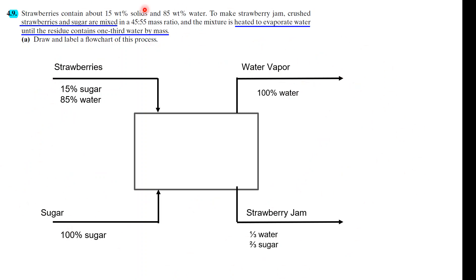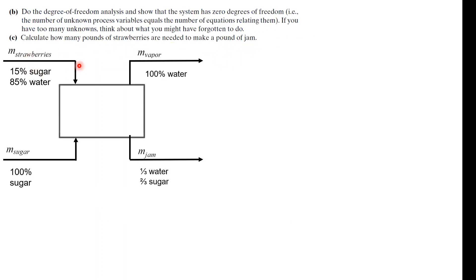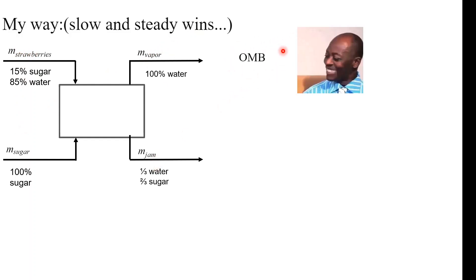This process diagram is the hardest part — I really encourage you to think about it by yourself and focus on it, because once you have this the rest is just algebra. A small tip: convert your variables and units. I'm just going to use abbreviations like 'str' for strawberry, 'sg' for sugar, whatever works for you. Now we can write the overall mass balance — summation in equals summation out. The overall mass balance: strawberries plus sugar equals vapor plus jam. This is equation one.